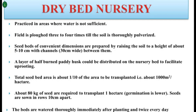In general, 1000 square meters of nursery area is required for transplanting per hectare of area. About 80 kg of seed are required to transplant one hectare. The seed rate in dry nursery is higher due to the lower germination rate — that is, 80 kg per hectare.